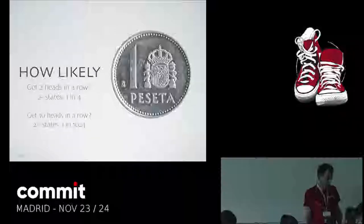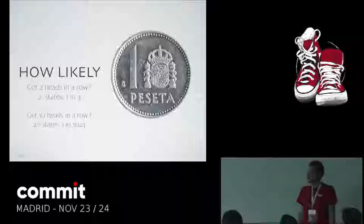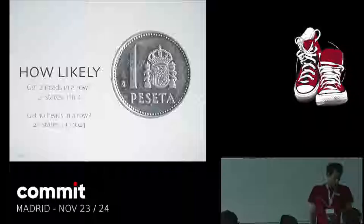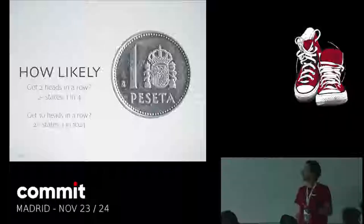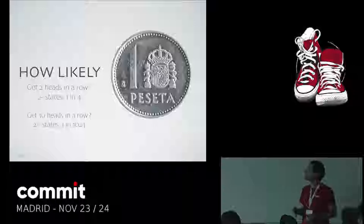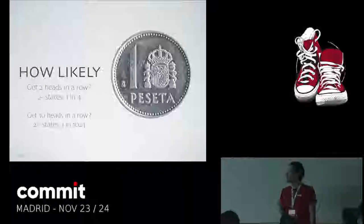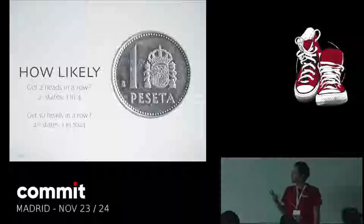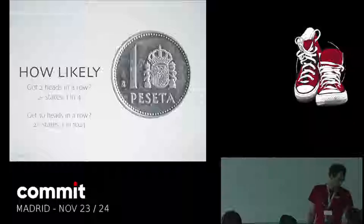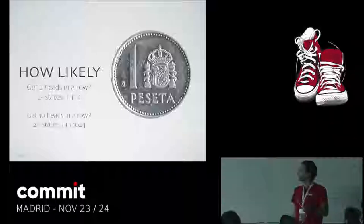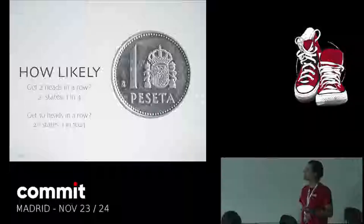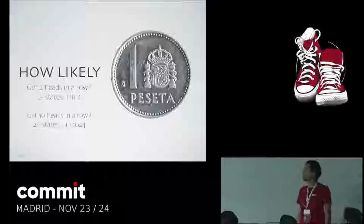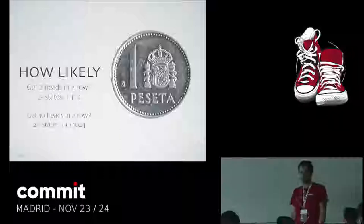I think it's very interesting how this algorithm works. Imagine we have a coin. How likely is it to get two heads in a row? You throw a coin — it's a completely random event. There are two possible states, head or the other side. I want two events, so that's two to the power of two states. So the chances of getting two heads in a row is one in four. We probably all went through this in high school.